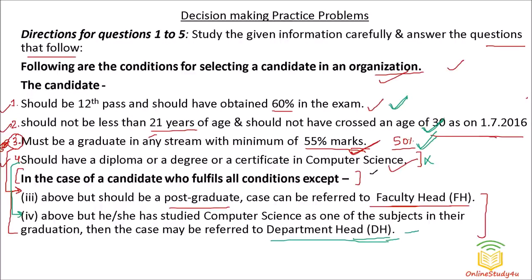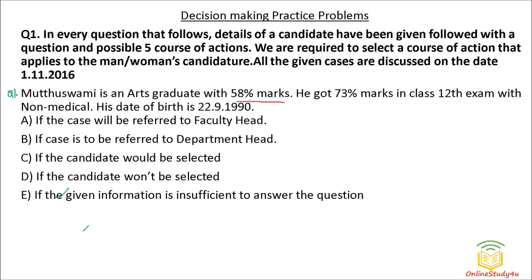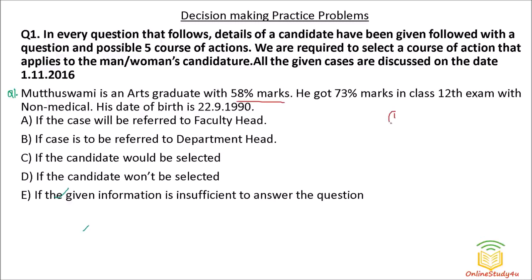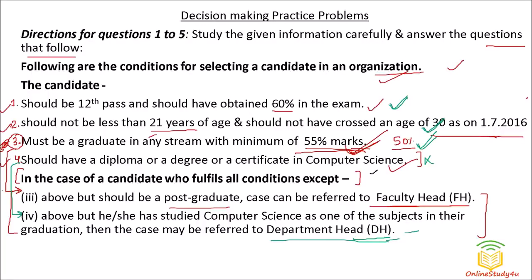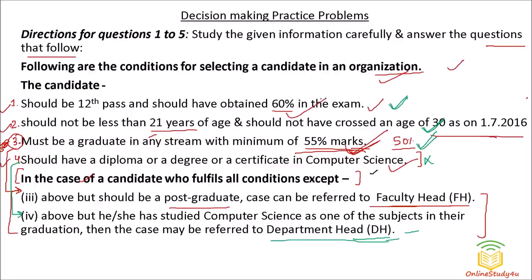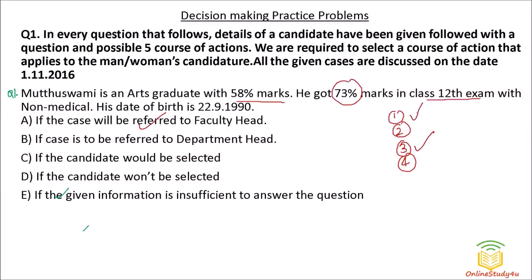Must be a graduate in any stream — arts, science, or commerce — with minimum 55 percent. He has 58 percent, so Condition 3 is satisfied. He got 73 percent in Class 12th, so Condition 1 is also satisfied. His date of birth is 1990, so in 2016 he will be around 26 years old, which is between 21 and 30 — Condition 2 is satisfied.